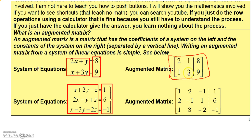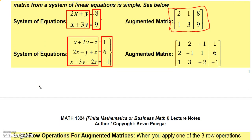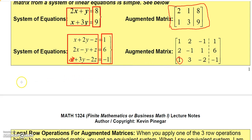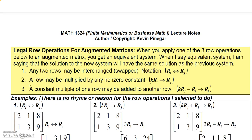You should also be able to go the other way — if given an augmented matrix, you should be able to write it as a system of equations. One important note: if there is no term for a variable in one of the equations, you simply put a 0 in that position. For example, if there's no x term in an equation, put a 0 where that coefficient would go.